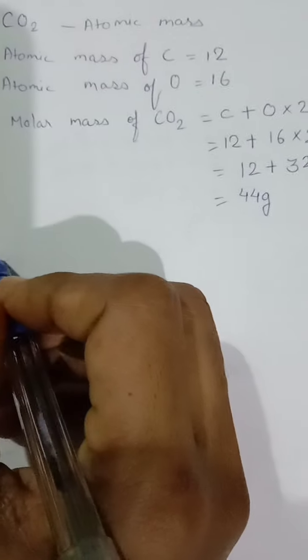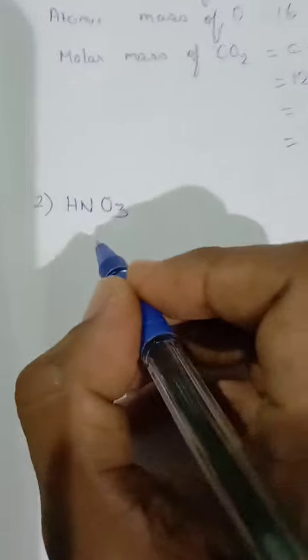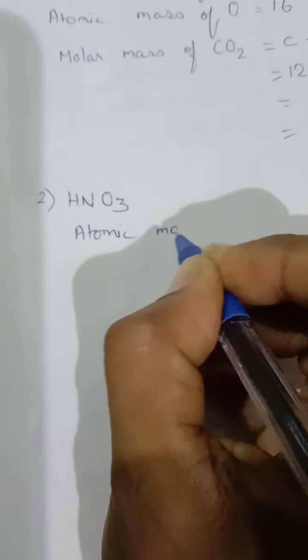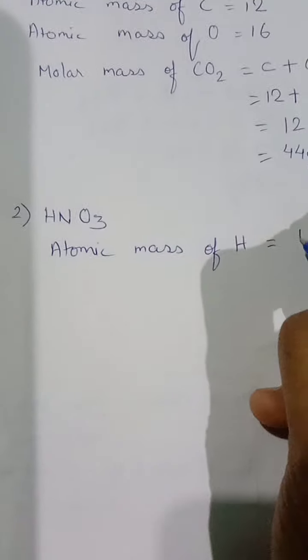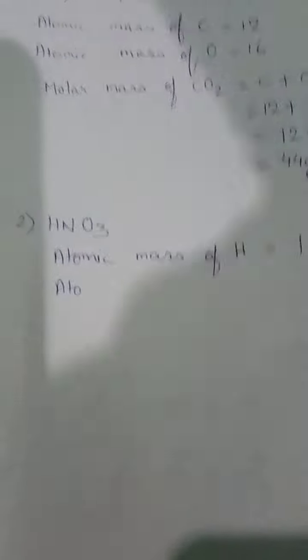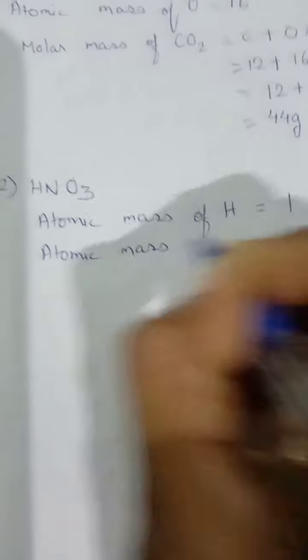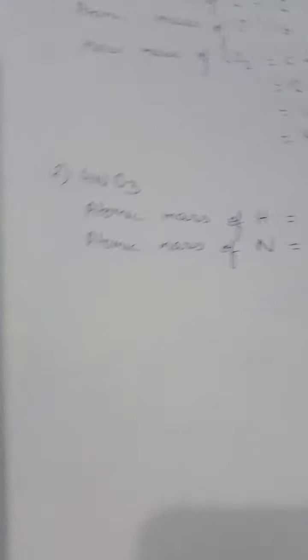Atomic mass of hydrogen is 1, atomic mass of nitrogen is 14, atomic mass of oxygen is 16.